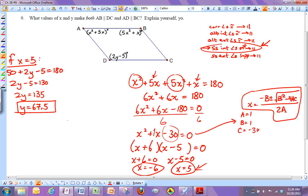We also have a different x here if x is negative 6. So if x is negative 6, this angle up here is negative 6 squared plus 5 times negative 6, which comes out to be 36 minus 30, so 6. So this angle up here would only be 6 degrees then.